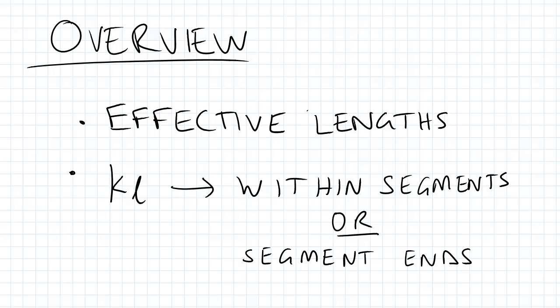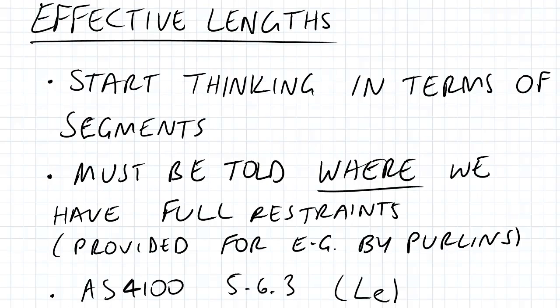Hi guys, just a brief overview of what I'll be covering today. I'll be looking into Effective Lengths and the KL factor, so that's within segments or segment ends and basically how to use the AS4100 code to find these values. Effective Lengths — the easiest way to start working with them is to think of them in terms of segments, which I'll explain later in this video.